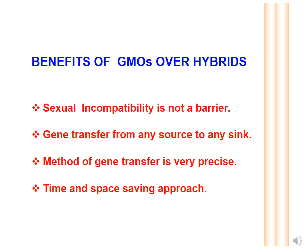The second point is that gene transfer can be from any source to any sink. The third point is that the method of gene transfer is very precise in GMOs — only the gene of interest is transferred to the recipient organism. In contrast, when making a hybrid, along with the gene of interest, several other genes also get transferred, making it an imprecise method.